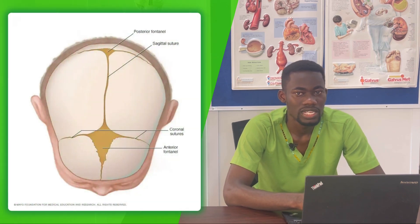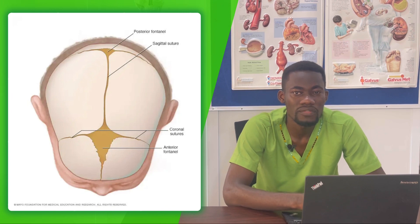There are about six fontanels on the fetal skull: the posterior fontanel, the anterior fontanel, the two sphenoidal fontanels, and the two mastoid fontanels. In obstetrical nursing, the most important are the posterior and anterior fontanels. The posterior fontanel closes by six weeks to three months, while the anterior fontanel closes by one to three years. Looking at the options, the correct answer is six to eight weeks — option A.